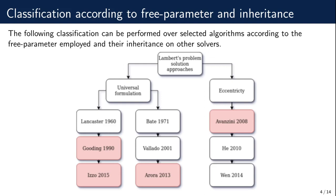For the case of Arora, this is the latest of its branch and has never been compared against other routines, although Arora included a brief comparison against Gooding's solver in his article. Finally, a new solution approach was started by Avanzini, exploiting the eccentricity as the free parameter. Because it is the first of its class, it was included within the performance comparison.